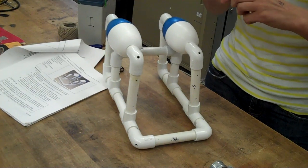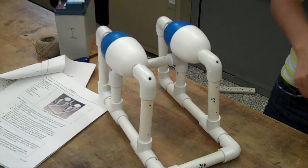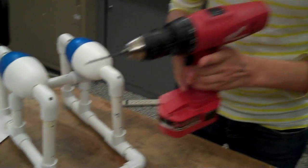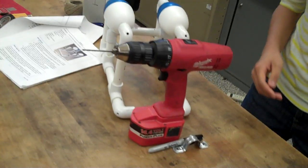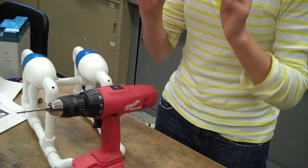So now we've drawn a dot where the hole should be and we're going to take a drill to drill holes. Before using the drill, make sure you put on your safety glasses.